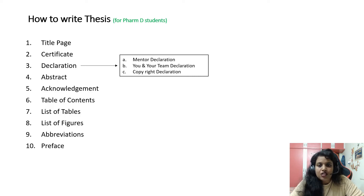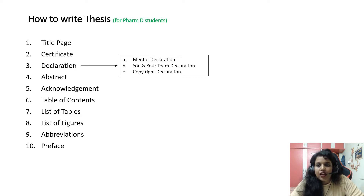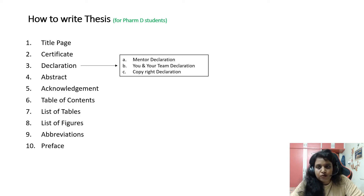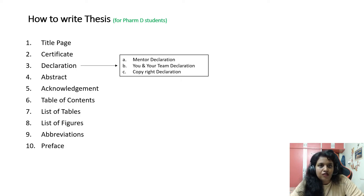The third part is the declaration certificate — there are three certificates. First is the mentor declaration, where the mentor declares that the students were under their guidance, the thesis is original, and has not been copied. Then you and your team declare the same — that the thesis is original and has not been submitted to any other degree or university before. Third is the copyright declaration certificate, which states that no one can use your research under their name without your consent.